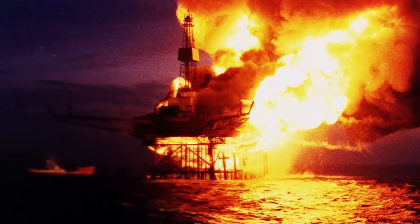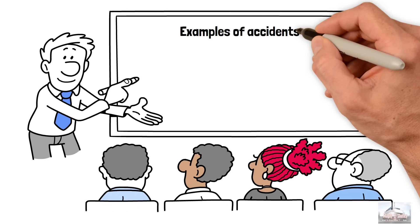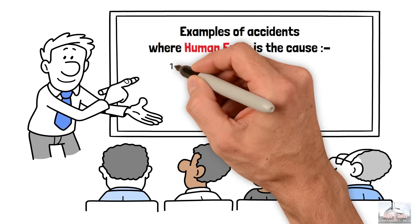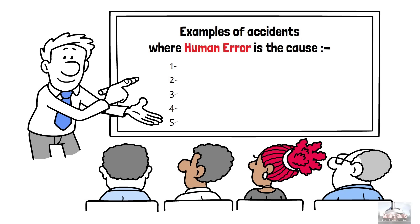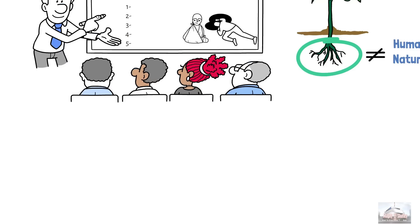Additionally, inexperience among workers made the situation worse. It's too easy to give numerous examples of accidents where human error was one of the contributing factors to major accidents with severe injuries and fatalities. However, the root causes of these human failures may not be related to human nature itself.